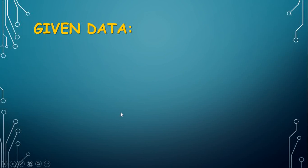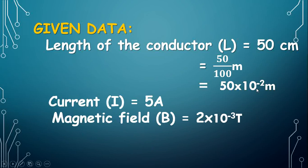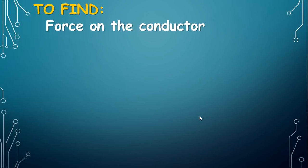Given data: length of the conductor L is equal to 50 cm. We have to convert cm into m, so divide 50 by 100, giving 50 into 10 power minus 2 m. Current I is equal to 5 Ampere. Magnetic field B is equal to 2 into 10 power minus 3 Tesla. To find: force on the conductor.